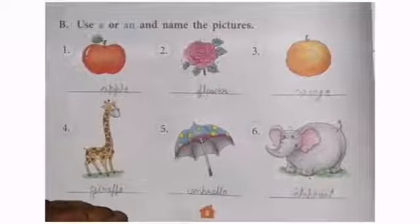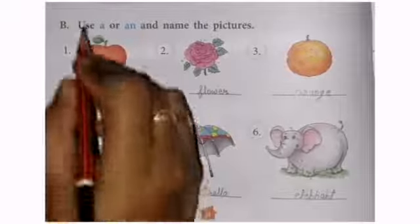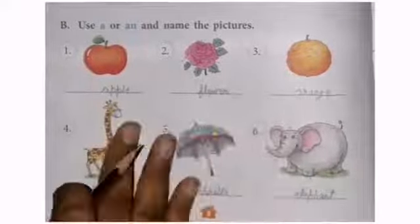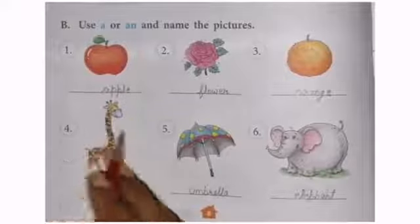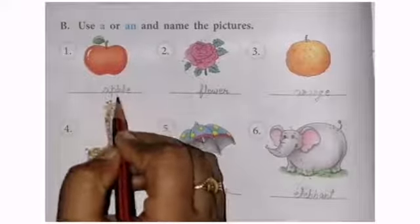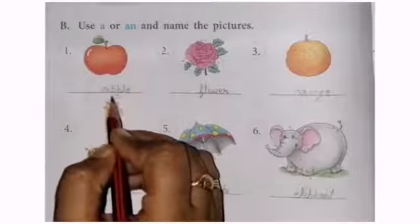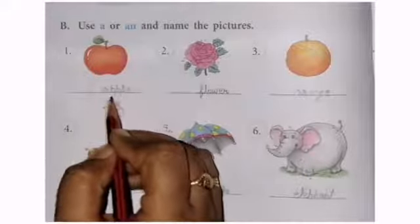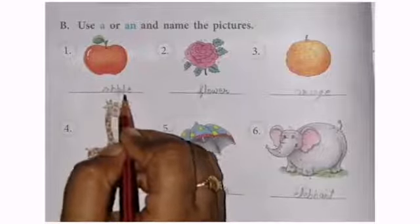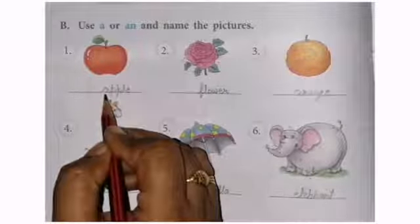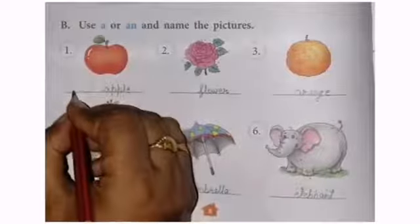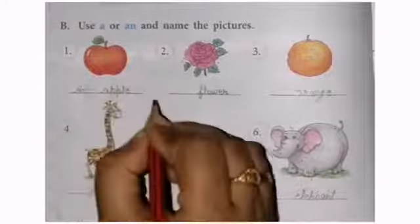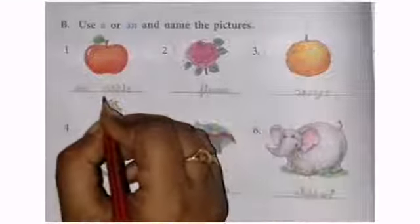Now, now it's time to use the A and AN with these words. Firstly, we have to check. Sab se pehle mein yeh dekhna hoga. Hamara word, kis se start ho raha hai? Vowel se start ho raha hai ya consonant se start ho raha hai? Let us check. A, double p, l, e. Then, this word is start from A. A is vowel. Then, we use here, an. An apple.